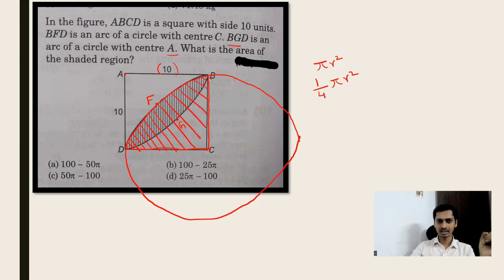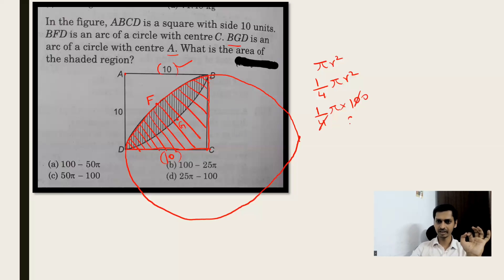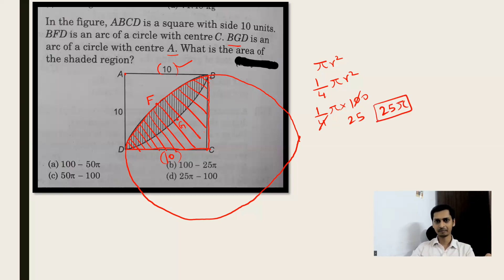The side of the square is 10 units, so the radius of the circle is also 10. Therefore, the quarter circle area is (1/4) × π r² = (1/4) × π × 10 × 10 = (1/4) × 100π = 25π. So 25π is the area of the red shaded region — the quarter circle.